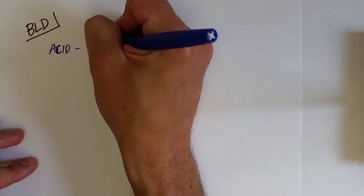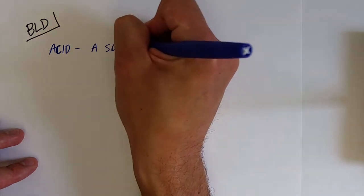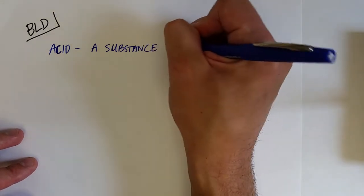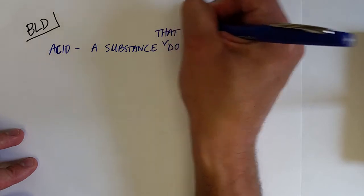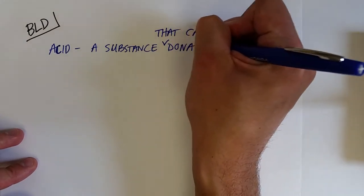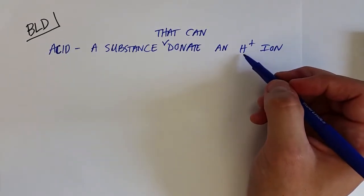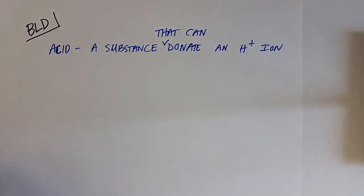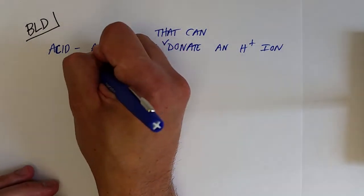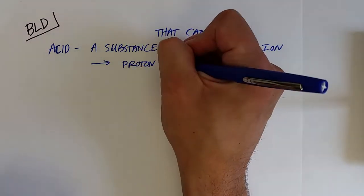The second definition of acids and bases is known as the Bronsted-Lowry definition. It's a little bit more inclusive to other molecules that have acidic or basic properties. For Bronsted-Lowry, an acid is a substance that can donate an H-plus ion. Since an H-plus cation — a hydrogen cation — is just a proton (a hydrogen atom has one proton and one electron; if it loses its electron it's a proton), a Bronsted-Lowry acid is often called a proton donor.